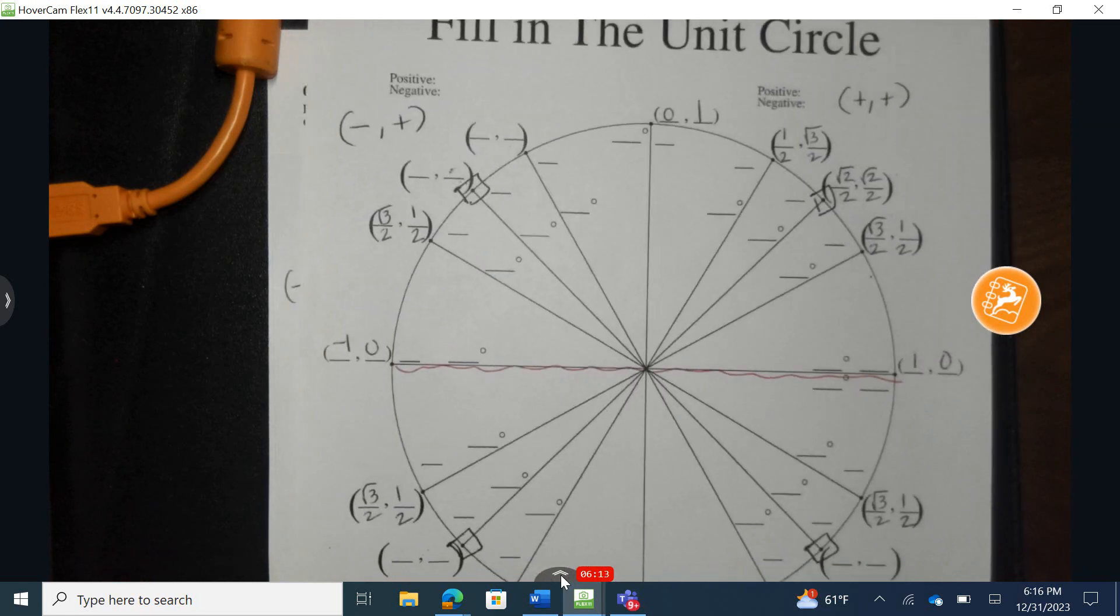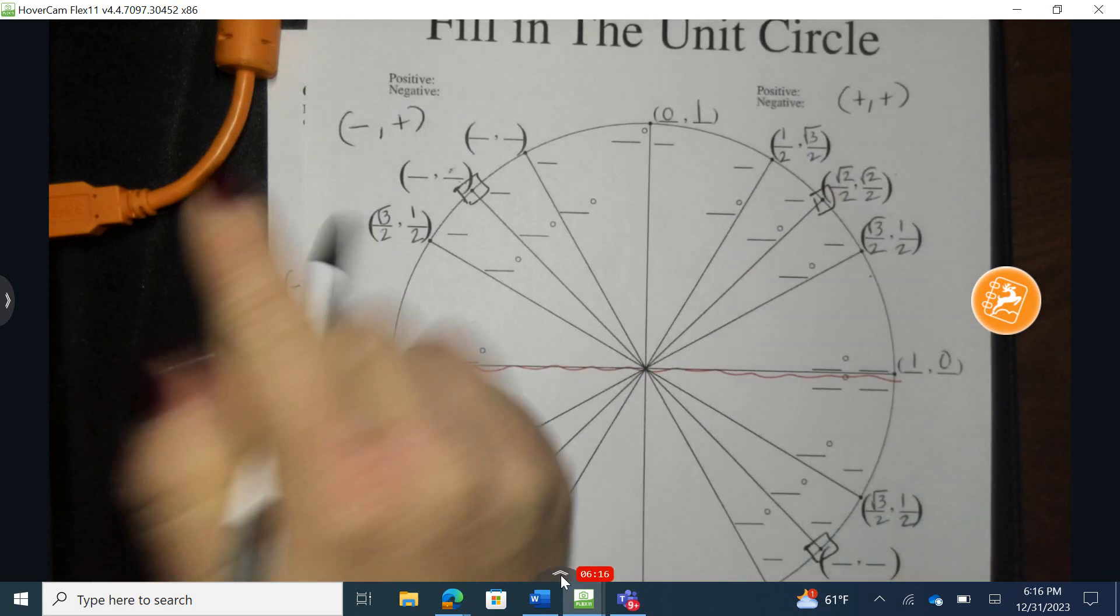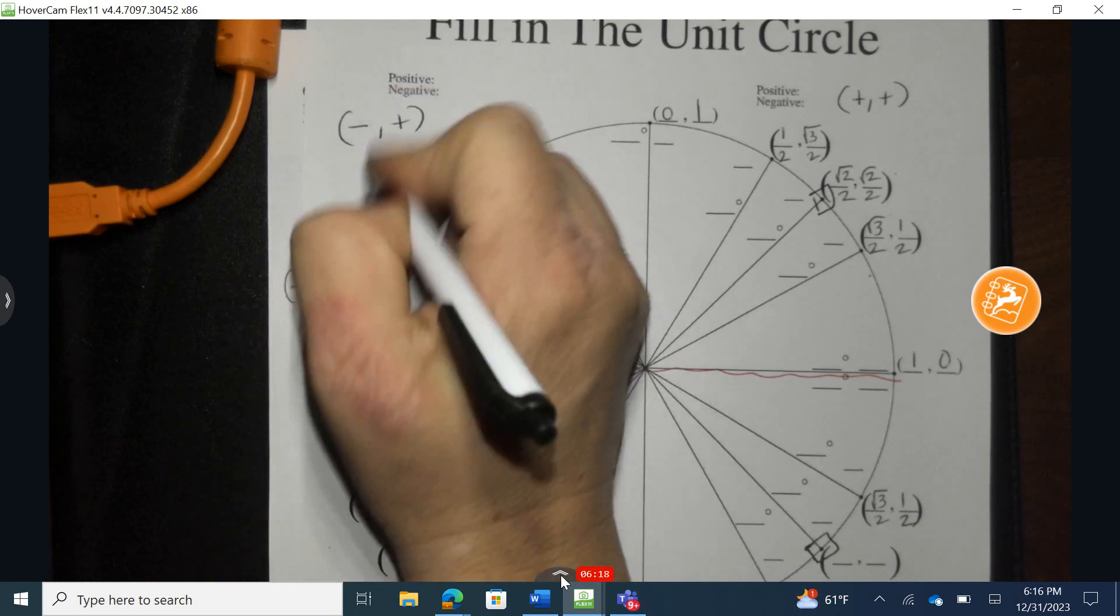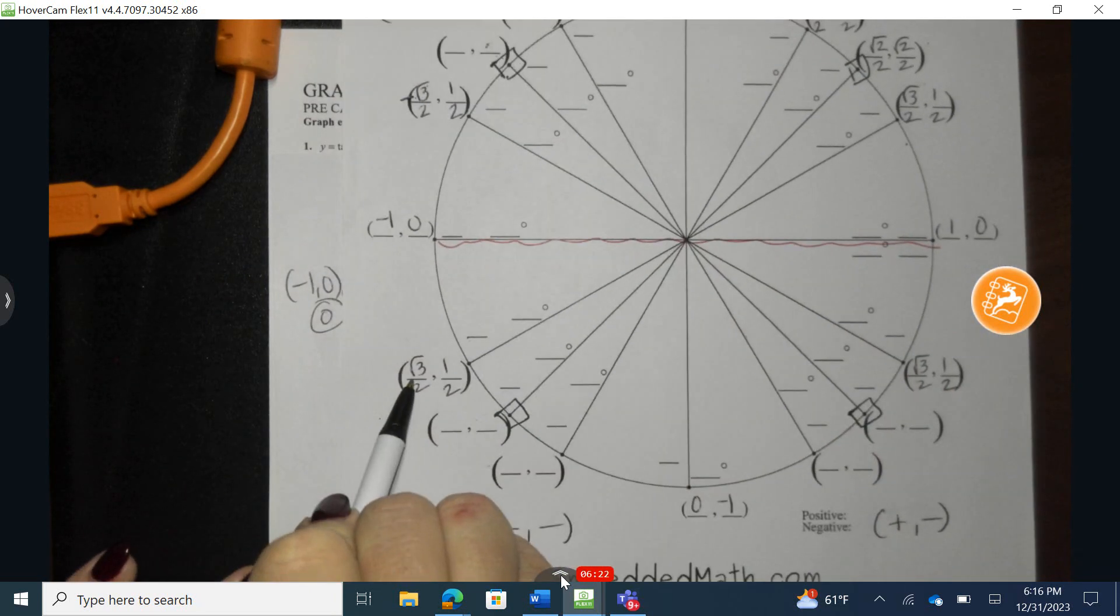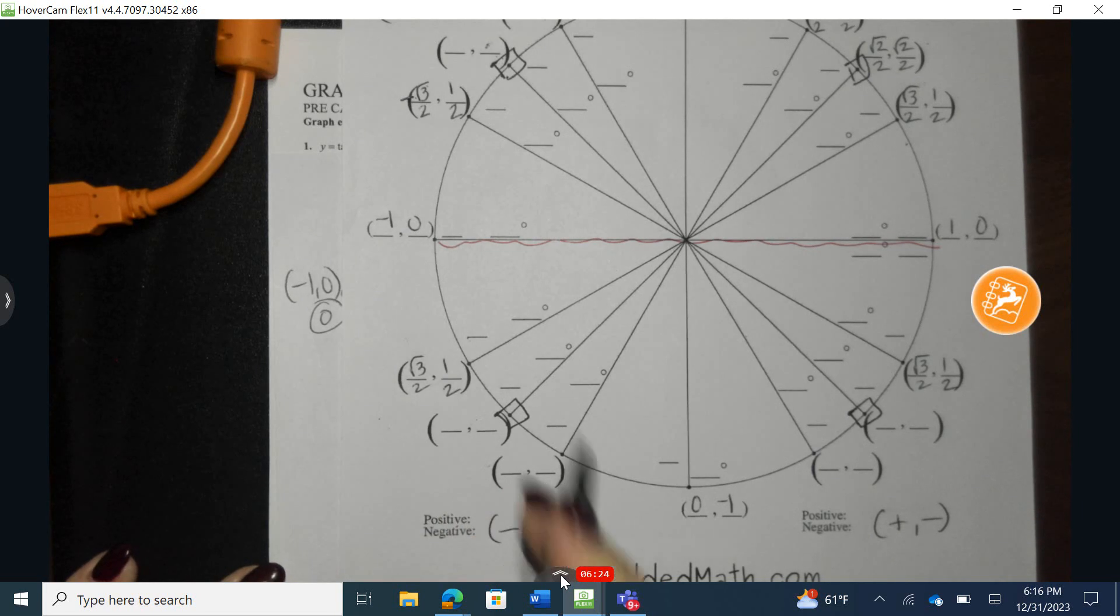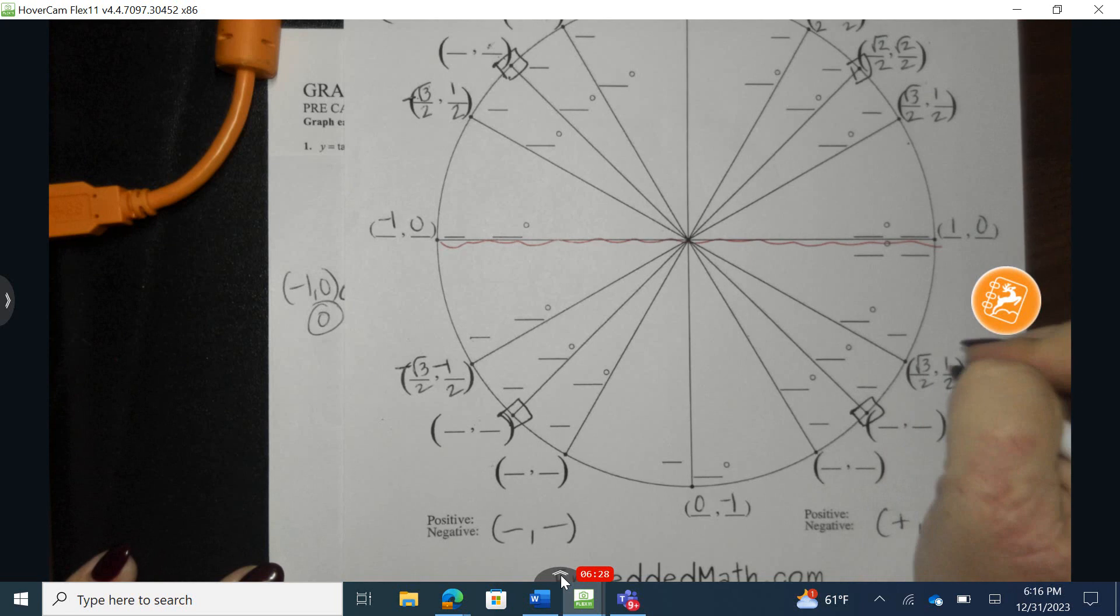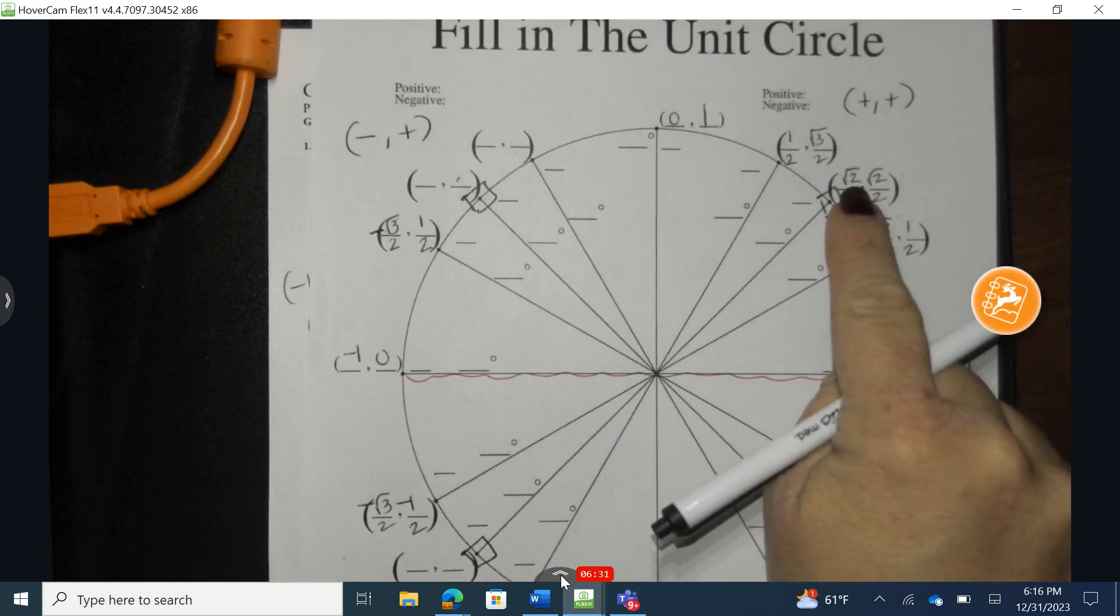Knowing that, I can come back here and go, okay, all of these should be positive. Now, radical three over two should be negative, but one half should be positive. Radical three over two and one half should both be negative. And the first one is positive, and the second one is negative. Okay, same thing here.